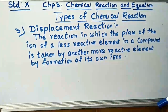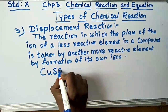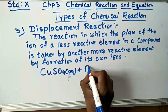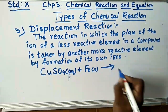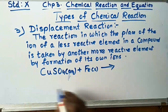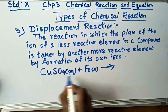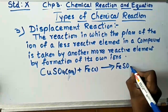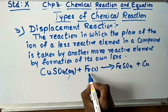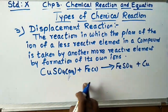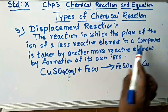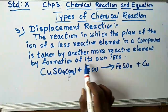Iron is more reactive and copper is less reactive, so the more reactive element displaces the less reactive one. That means the reaction in which the place of the ion of a less reactive element in a compound is taken by another more reactive element — this is a displacement reaction. The reaction of iron nails with copper sulphate solution is a classic example.